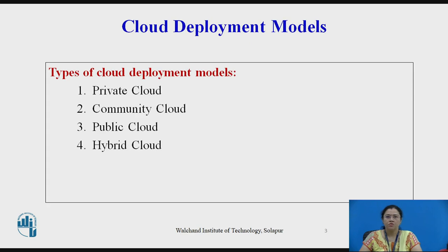Basically there are four different types of cloud deployment models: the first one is private cloud, second one is community cloud, third is public cloud and the last one is hybrid cloud. These deployment models represent a specific type of cloud environment, primarily distinguished by ownership, size and access.